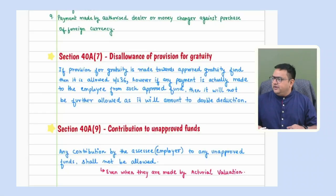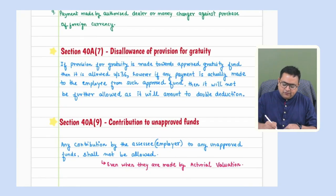There are two more sections — 40A(7) and 40A(9) — which are small but important. Let's discuss them.